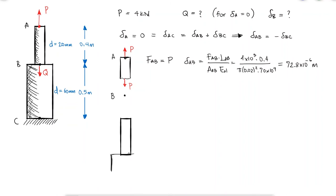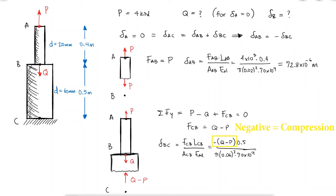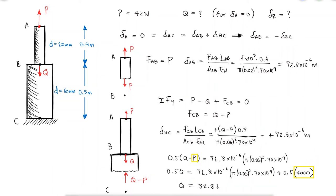If the internal force between B and C is Q-P in compression, and the deflection of B with respect to C is equal to the negative value of the deflection of A with respect to B, we find that the load Q is equal to 32.8 kN.